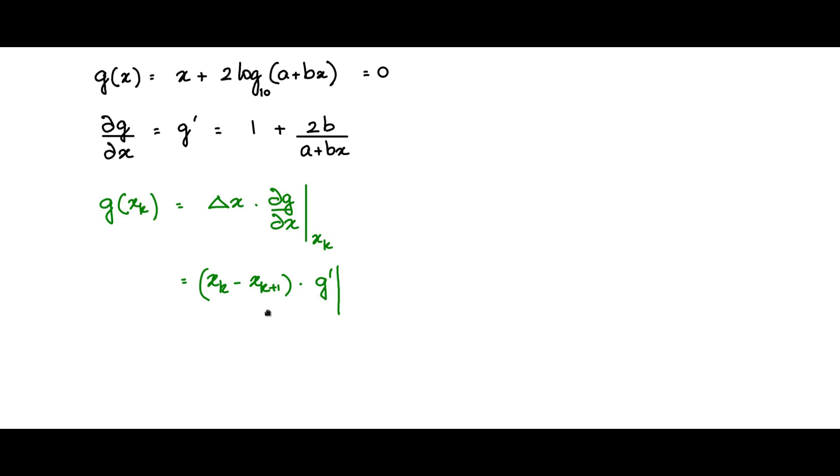This into g prime evaluated at x k. Now this equation if you rearrange them you will get x k plus 1 is equal to x k minus g evaluated at x k by g prime evaluated at x k.